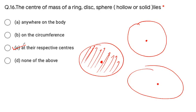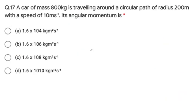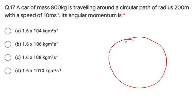The next question is: center of mass of a ring, disc, and sphere — does it lie anywhere on the body, on the circumference, at their respective centers, or none of the above? In all these cases, the center of mass lies at the geometric center of the body. The correct answer is at their respective centers.